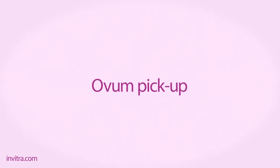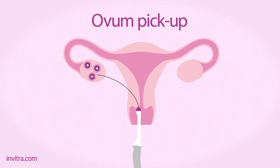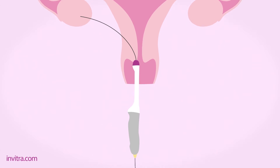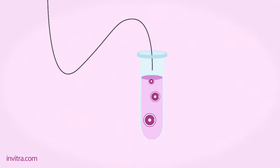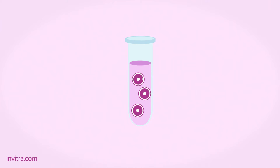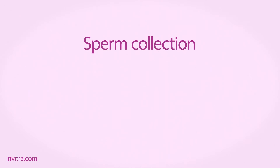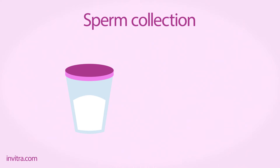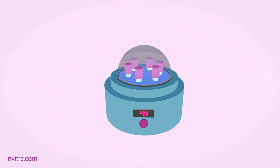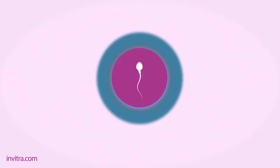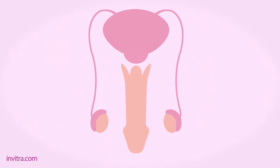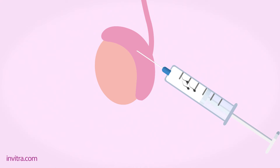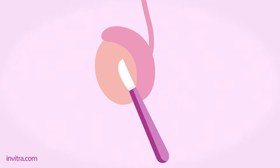Step 2: Ovum pick-up. Surgery is necessary to aspirate the follicular fluid contained within the ovarian follicles, with the purpose of retrieving all the mature eggs before natural ovulation takes place. Step 3: Sperm collection. Semen samples are obtained through ejaculation. Then the sperm is washed by means of sperm capacitation, before selecting the sperm with the best quality. If no sperm were obtained, there exist other methods to obtain sperm cells, such as epididymal aspiration or testicular biopsy.